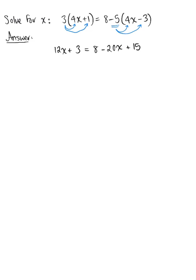And then we notice on our right hand side here that we have two like terms, our two constant values, so nothing on the left hand side changes, that's still 12x plus 3 is equal to, so we have 8 plus 15 leaving us with 23 minus 20x.